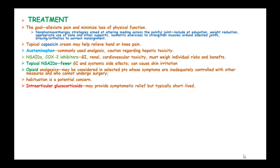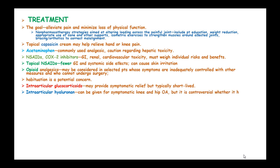Intraarticular glucocorticoids may provide symptomatic relief, but typically only for a short period. Intraarticular hyaluronan can be given for symptomatic knee and hip osteoarthritis, but it is controversial whether it has efficacy beyond placebo.